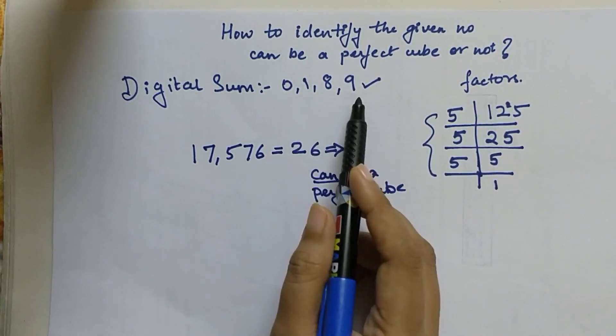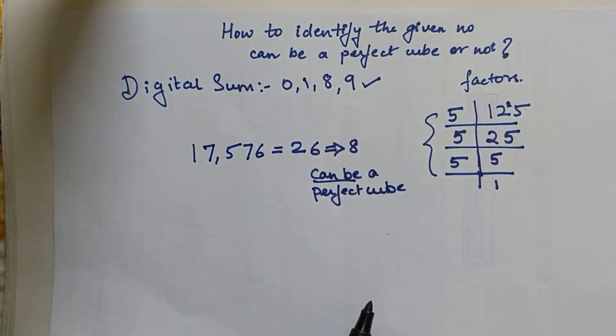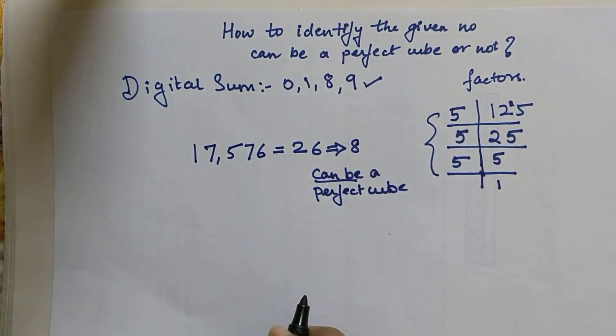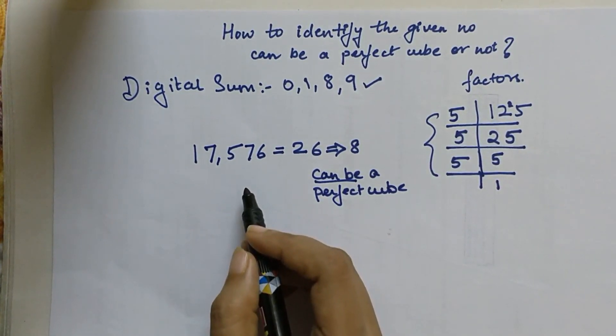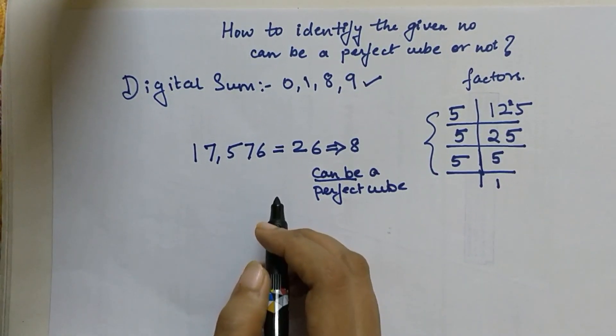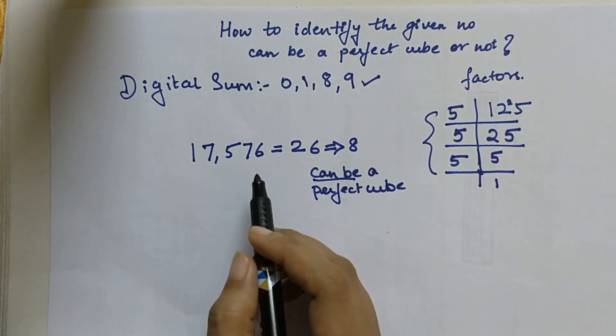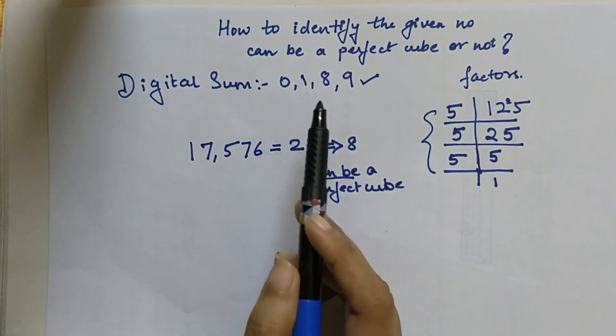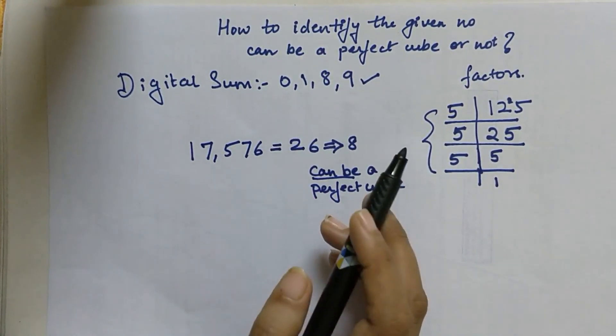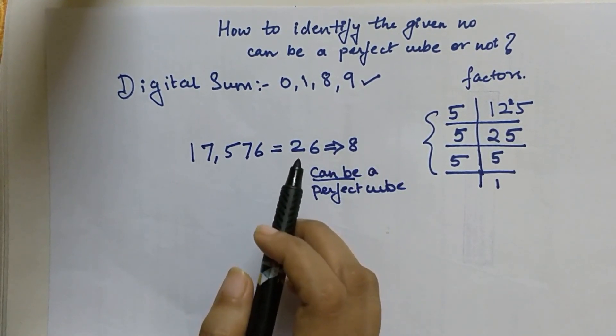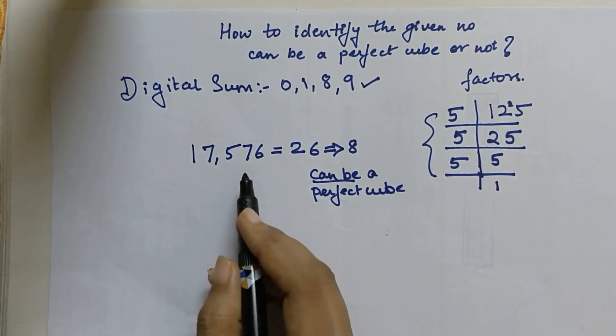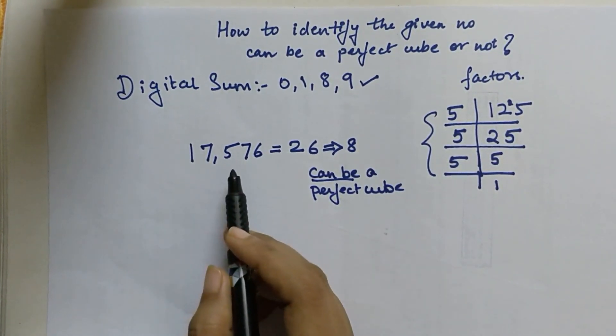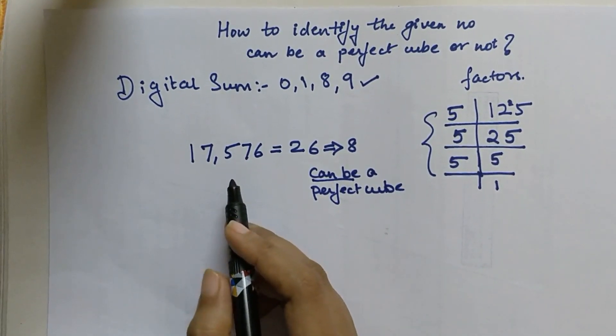This trick does not necessarily say that all the numbers whose digital sum come as 0, 1, 8, or 9, all of them become a perfect cube. But this trick will help us to identify whether the number can be a perfect cube or not. In case if you have a number whose digital sum is not 0, 1, 8, or 9, then you can straight away cancel that number as being an imperfect cube. But you will have to check whether this number is giving you a perfect cube or not.